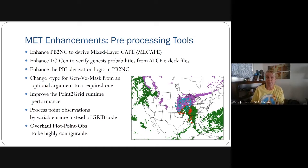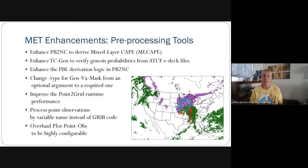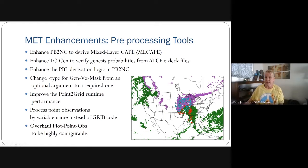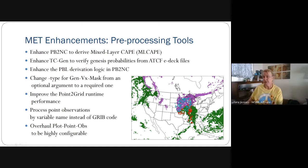We added support for using variable names in point observation data, especially in netCDF files, instead of always being tied to GRIB code. That gives more flexibility on the point observations that can be used in the point-based tools. We also overhauled plot point obs to be more highly configurable. On the right-hand side is an example of looking at different types of precipitation type observations in dots overlaid over a gridded field showing forecast precipitation types, with the ability to configure color coding based on different fields.